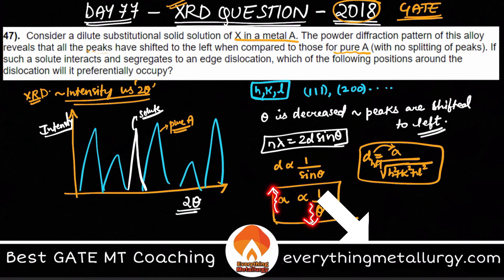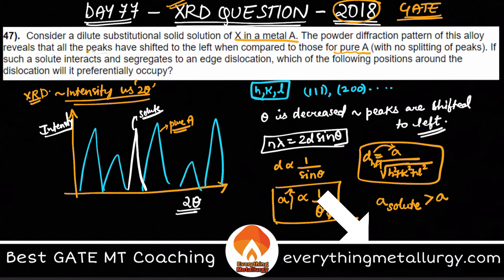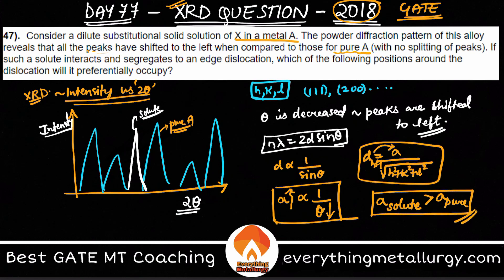So if theta is reduced, the lattice parameter a increases. In this case, theta decreased because of the solute, meaning the lattice parameter increased. This tells us that the lattice parameter of solute X is greater than the lattice parameter of pure A — that's our first conclusion.